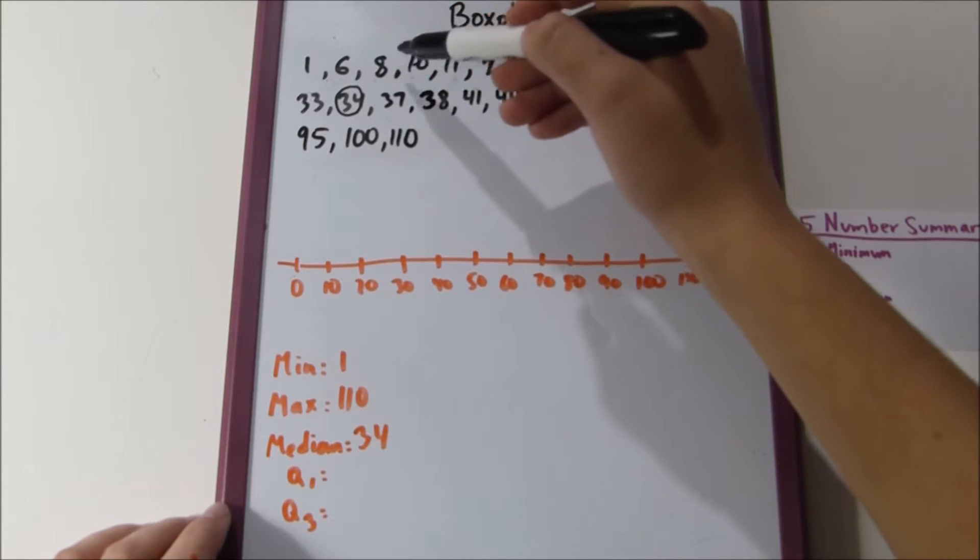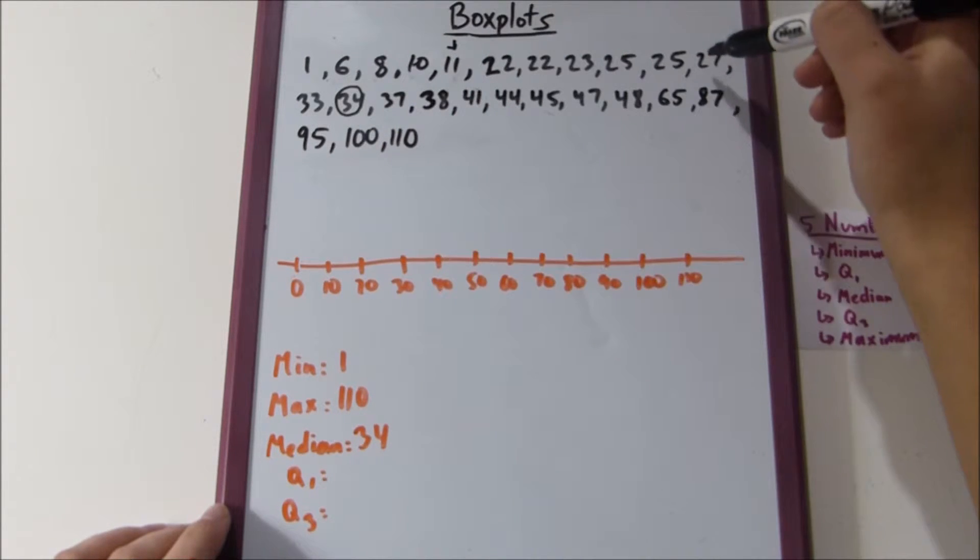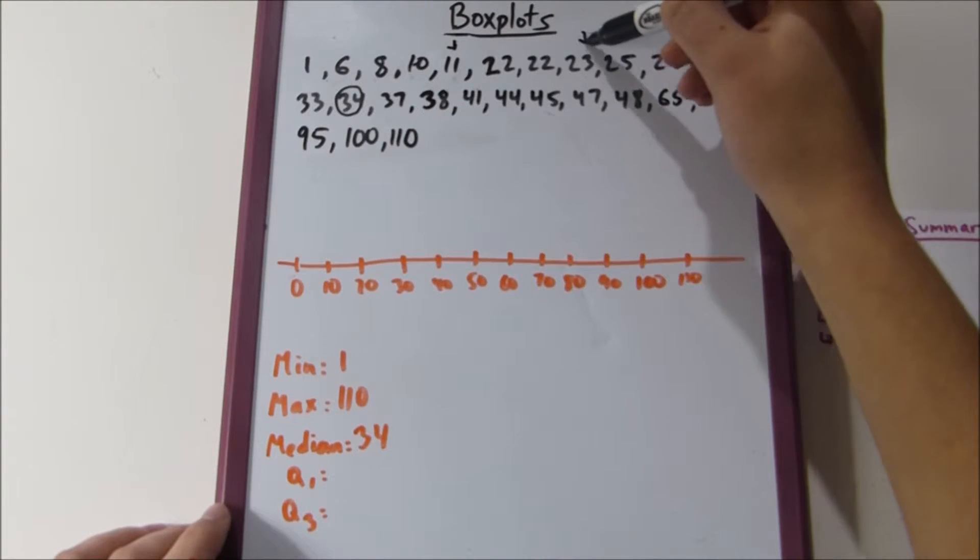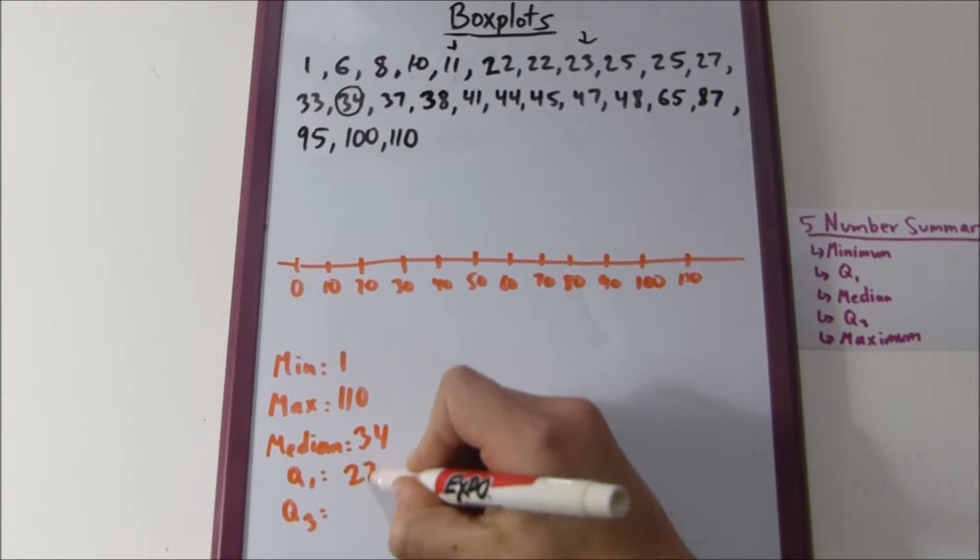So, let's count off five from either end to find the two numbers in the middle. One, two, three, four, five, right there. One, two, three, four, five, right there. So, the two numbers in the middle are twenty-two and twenty-two, and the average of those is simply twenty-two.